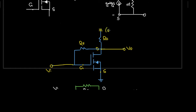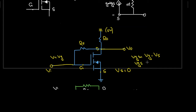The supply voltage VDD will be grounded because for AC analysis all DC sources are grounded, giving us zero volts there. The input voltage Vi is directly connected to the gate terminal, so Vi = Vg. The source is grounded, so Vs = 0, which means Vgs = Vg − Vs = Vi. This is equation number one. Also, V0 = Vd.